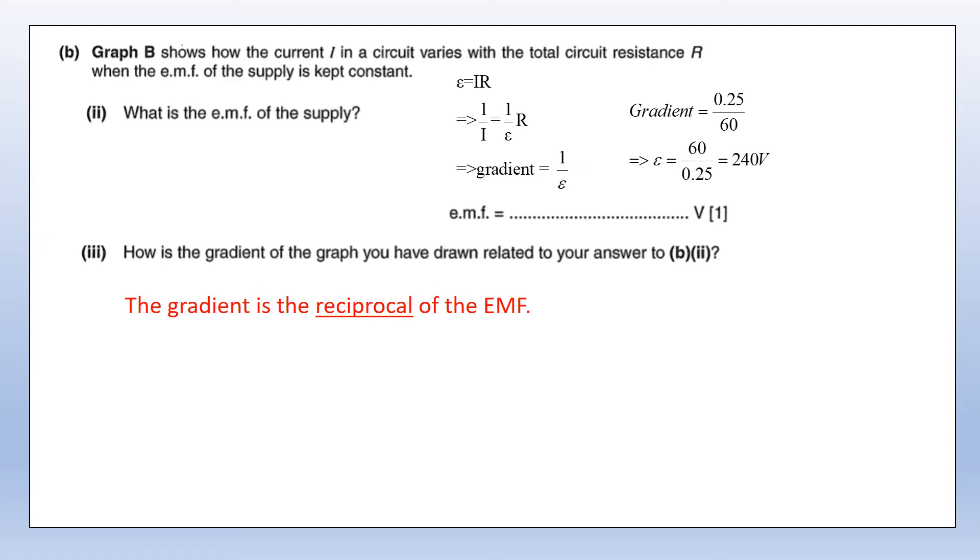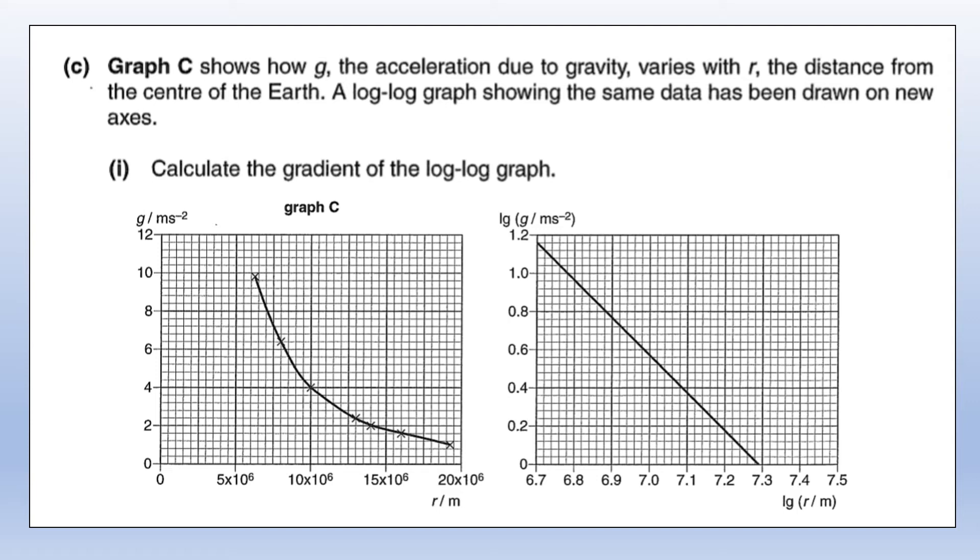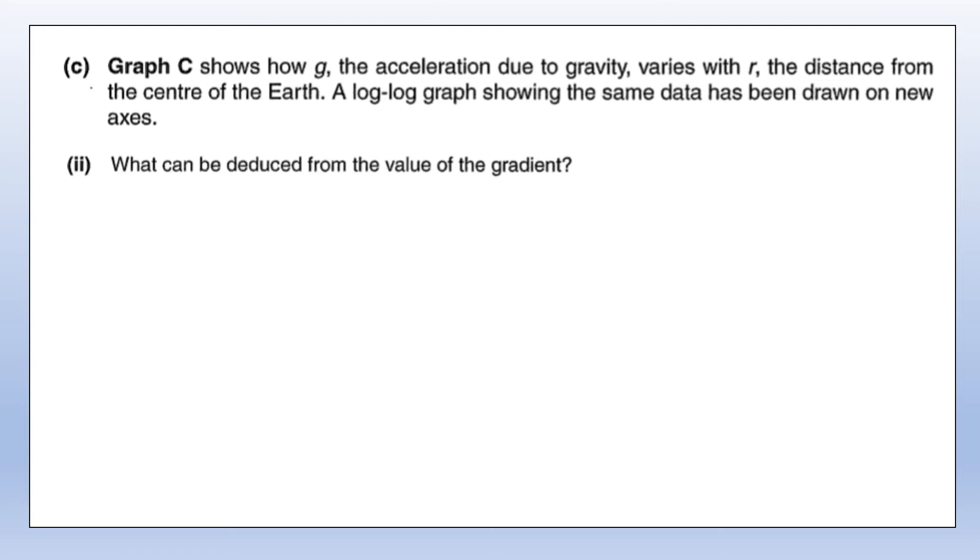Next graph: we've got a gravitational field strength or gravitational acceleration against distance from the center of the earth graph, which has been turned into a log g against log r graph, a straight line with a negative gradient. First we're going to calculate the gradient of the graph: change in y over change in x over the whole graph. Y ends at 0, starts at 1.16. X ends at 7.29, starts at 6.7, giving us a gradient of minus 1.97.